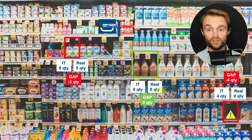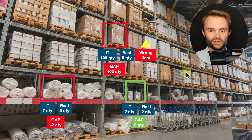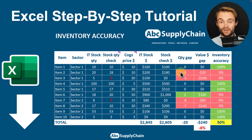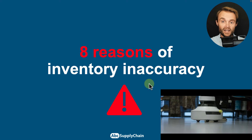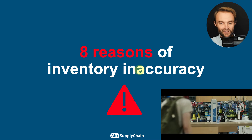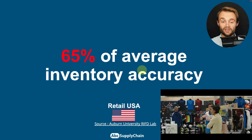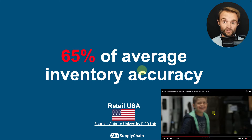In this video, my friends, we're going to talk about inventory accuracy — how to track it and how to improve it. Whenever you have a retail business like this one, or a warehouse or a factory. I'm going to teach you with a step-by-step Excel tutorial that you can download below this video how to calculate inventory accuracy very quickly. I'm also going to give you eight reasons why it is so low — for example, for retail businesses in the US we only have 65% inventory accuracy.